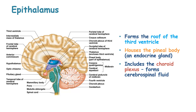The epithalamus forms the roof of the third ventricle and houses what is known as the pineal gland, or the pineal body, which is an endocrine gland. The epithalamus also includes the choroid plexus, which is responsible for cerebrospinal fluid formation.